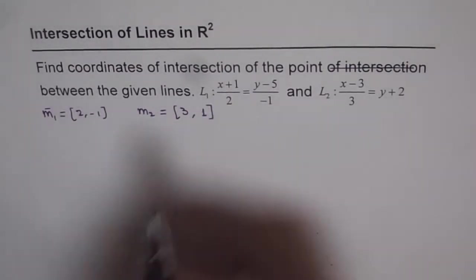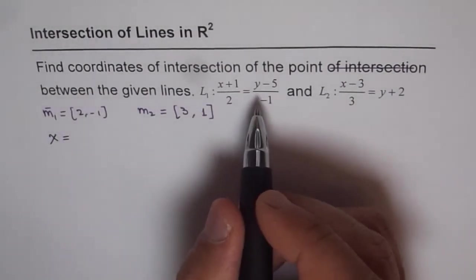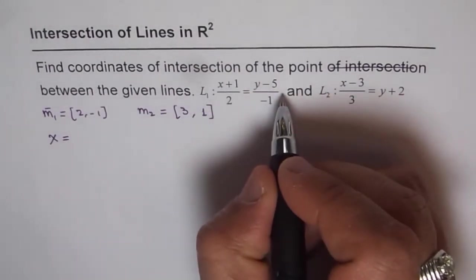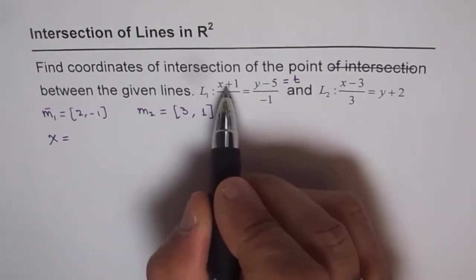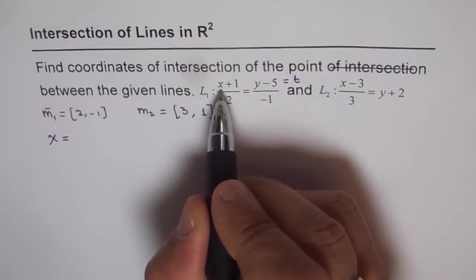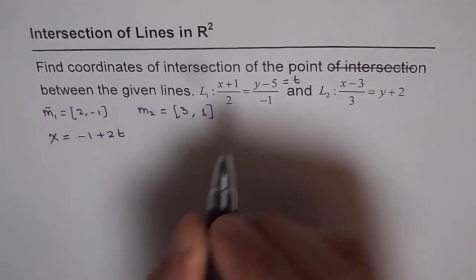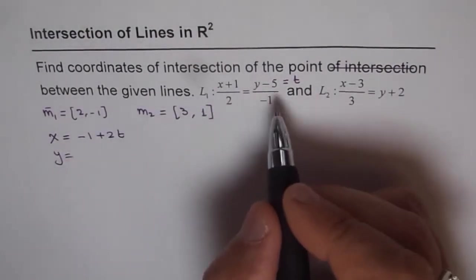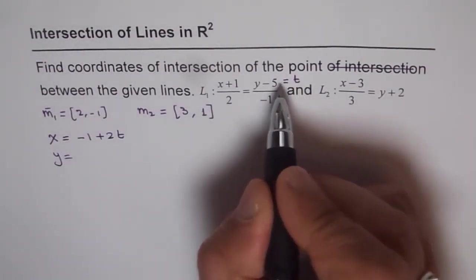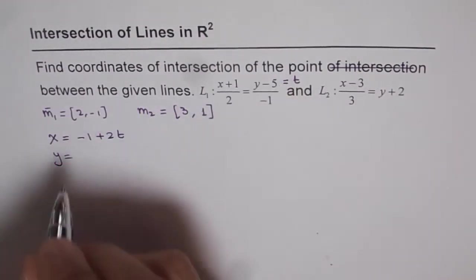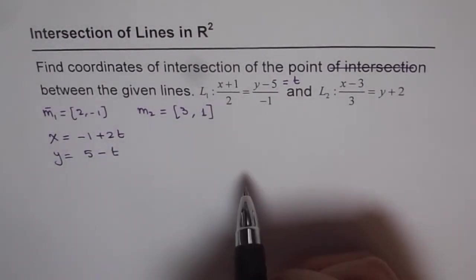For the first equation L1, a general point on this line — if we set each expression equal to parameter t — gives x = -1 + 2t. The y value: multiply -1 times t and take 5 to the other side, so we get y = 5 - t. That is the parametric equation for line L1.